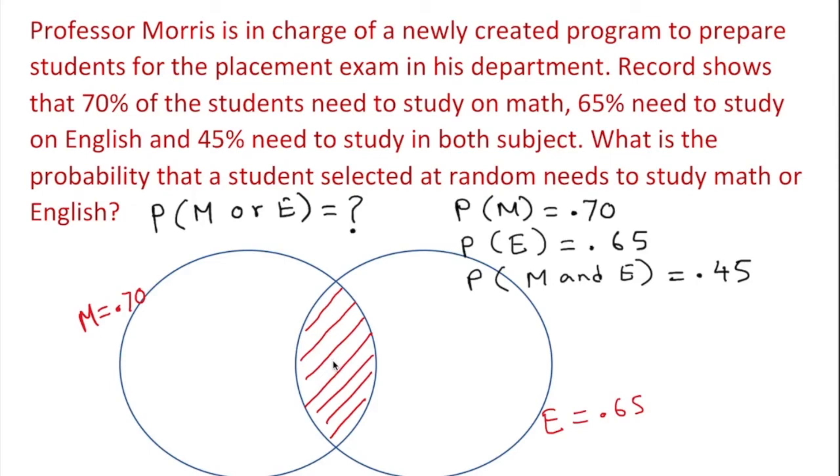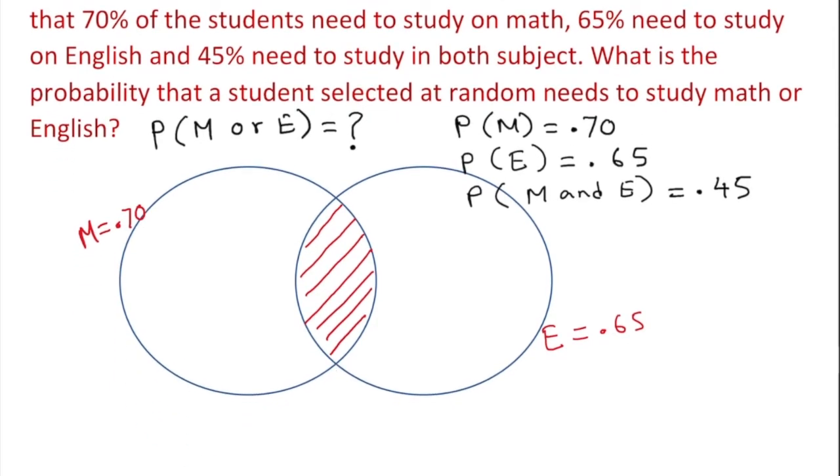So what do you know about dependent events? We have the formula. By the way, this is going to be probability of M and E - that's in the middle. So probability of math or English equals probability of math plus probability of English.